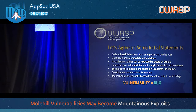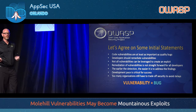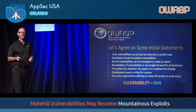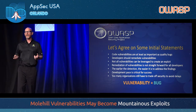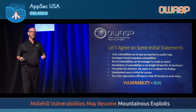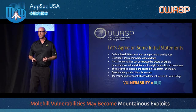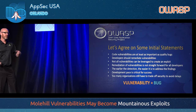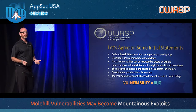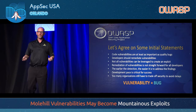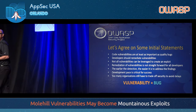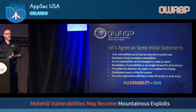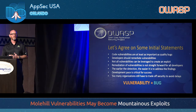Let's agree on some initial statements — you can agree or disagree. Code vulnerabilities are at least as important as quality bugs. A bug is a bug is a bug. Why go down a different cycle for remediation? If it's a bug, just like a quality issue where something functionally doesn't work, you go through a QA process and defect tracking. Vulnerabilities associated with security should go down that same process — same implementation for remediation.